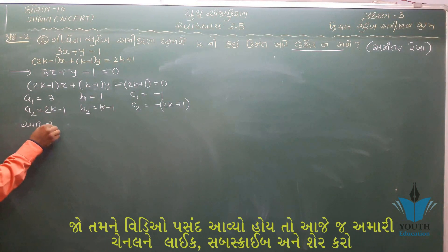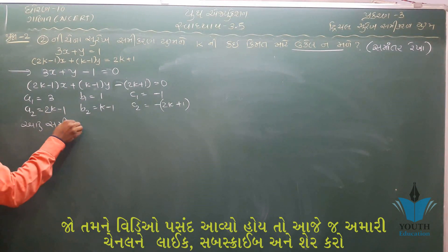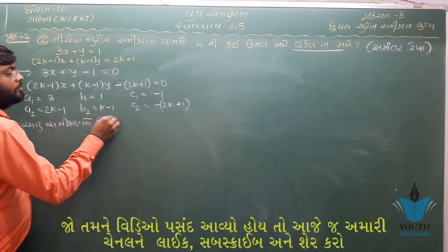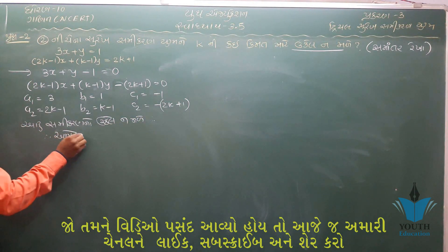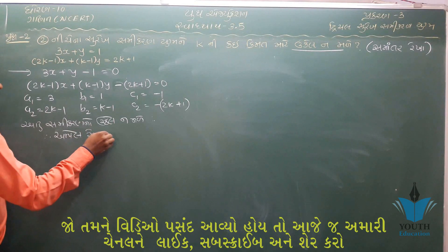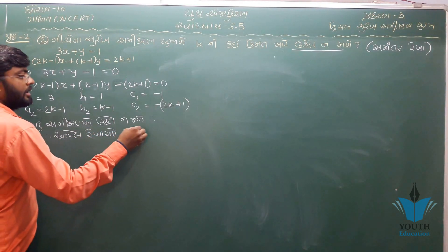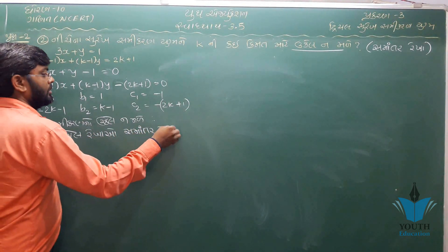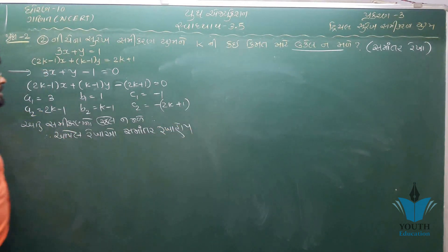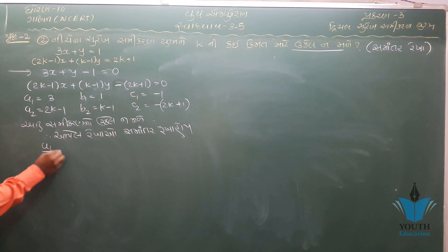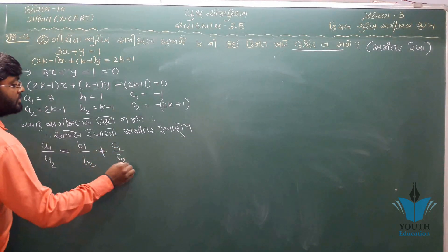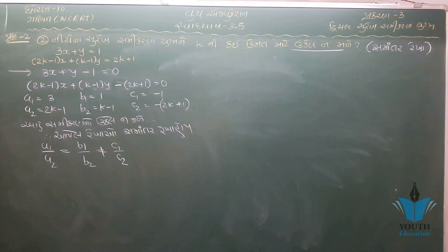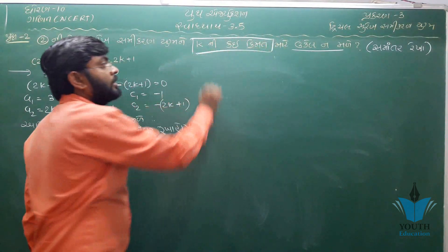ઉકેલ મળતો ન થાય — સમીકરણનો ઉકેલ ન મળે — માટે આપેલી રેખાઓ સમાંતર હોય. સમાંતર રેખાઓ માટે: a1/a2 = b1/b2, and this is not equal to c1/c2. આપણે k ની કિંમત શોધવાની છે.